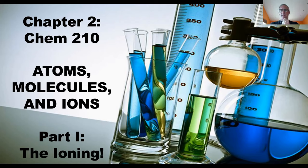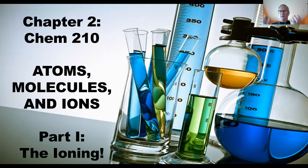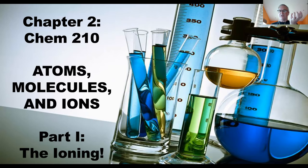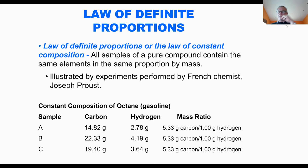We stopped on Tuesday talking about how the idea of the atom started to come into being. Scientists, chemists, physicists, alchemists started to notice things like molecules always showed definite proportions—one atom and one atom, or one atom and two atoms, never some odd number. The mass of reactants going into a chemical reaction was equal to the mass of the products afterwards, so these things were conserved.